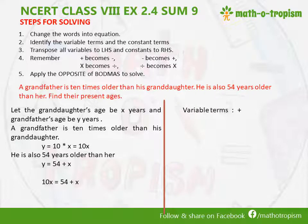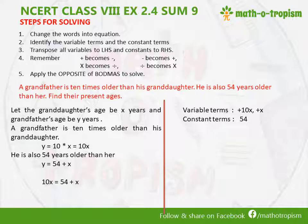In this expression, the variable terms are 10X and X, and the constant term is 54. We bring all the variable terms to the left-hand side, so it becomes 10X minus X is equal to 54. When we simplify, it becomes 9X is equal to 54. Since it is in multiplication, it goes to division on the right-hand side by applying BODMAS. So X is equal to 54 divided by 9, which is 6.